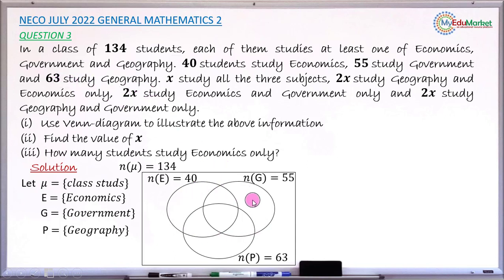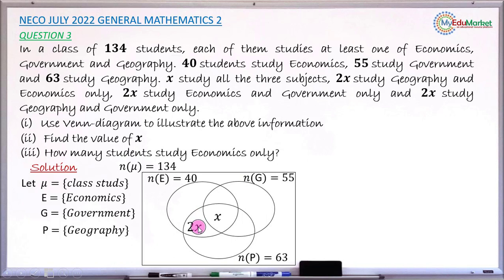So these are the three circles. Now we feed in the information. X students study all three subjects — that corresponds to the region inside all three circles, so we write x there. Next, 2x study geography and economics only — we write 2x in the region shared by geography and economics but not government. Then 2x study economics and government only, and the last 2x represents government and geography only.